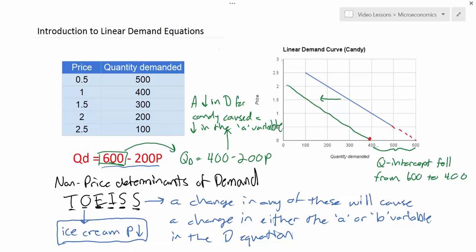The A variable or the quantity demanded at a price of zero would decrease if demand decreased and increase if demand increased.